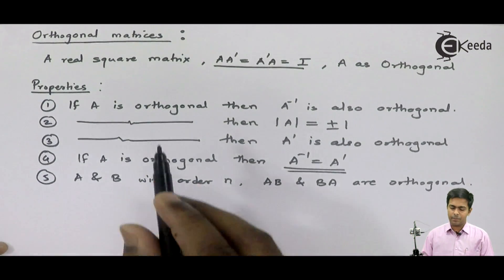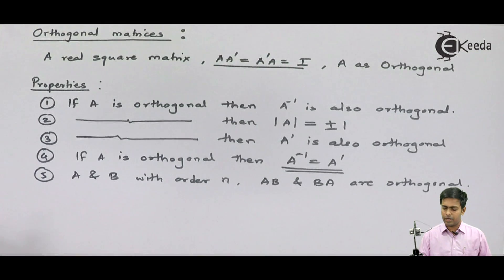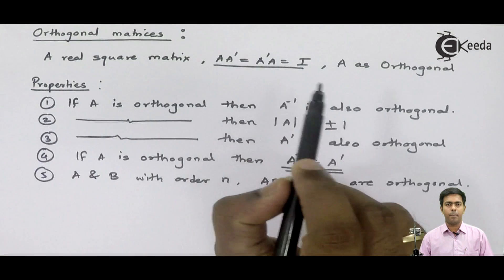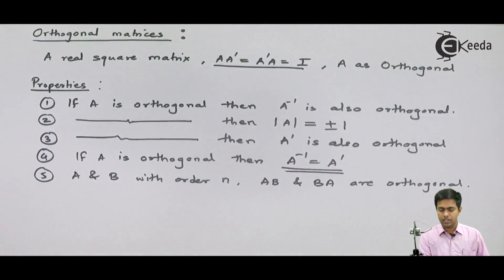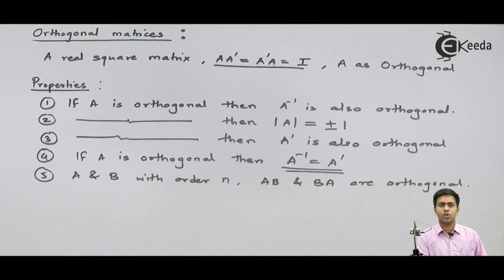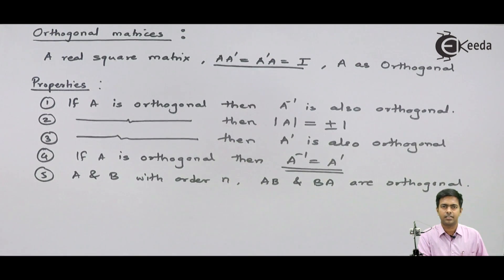So, here we have seen the five properties of orthogonal matrices and the condition required to prove a matrix as orthogonal matrix. Now, using these properties and the condition of orthogonal matrix, we can solve many examples based on orthogonal matrices. Thank you.